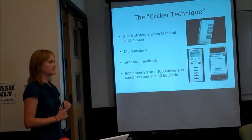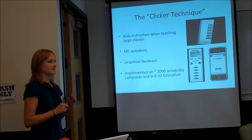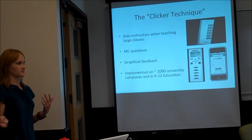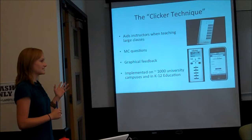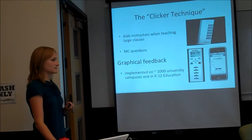Traditionally, what happens is students get multiple-choice questions, and then the students respond via their iClicker or whatever clicker they have. Sometimes there's discussion, sometimes there's not. Then they get feedback, and the instructor has the choice to display the histogram of the distribution of how students responded and how they selected each answer choice. It's been implemented in approximately 1,000 university campus settings and in K-12 education. Today, we're going to be focusing on the graphical feedback and how that can influence learning.